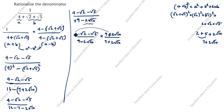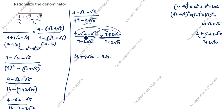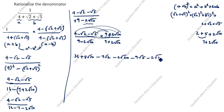Now we multiply the numerator terms. 4 into 9 is 36, and 4 into 2 root 10 is 8 root 10. Then minus root 2 into 9 is minus 9 root 2, and minus root 2 into 2 root 10 is minus 2 root 20. Next, minus root 5 into 9 is minus 9 root 5, and minus root 5 into 2 root 10 is minus 2 root 50.